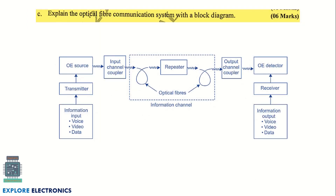The next question asks you to explain the optical fiber communication system with a block diagram. Optical fiber is the channel in this system, with repeaters used in between. The block diagram includes: information input, transmitter with optical source, channel with coupler, repeaters, detector, output coupler, and receiver. The input and output sides are symmetrical in structure.